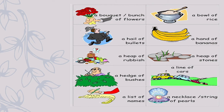A bouquet or bunch of flowers, a hail of bullets, a hand of bananas, a heap of rubbish — we should not have a heap of rubbish around! A heap of stones, the gardener is cutting a hedge of bushes, there is a line of cars that looks like a traffic jam. I am writing a list of names. Here is a necklace or string of pearls. The collective nouns are: bouquet, bunch, hail, hand, heap, hedge, line, list, necklace, and string. If I ask you the collective noun for bushes, you should know it is 'hedge'.